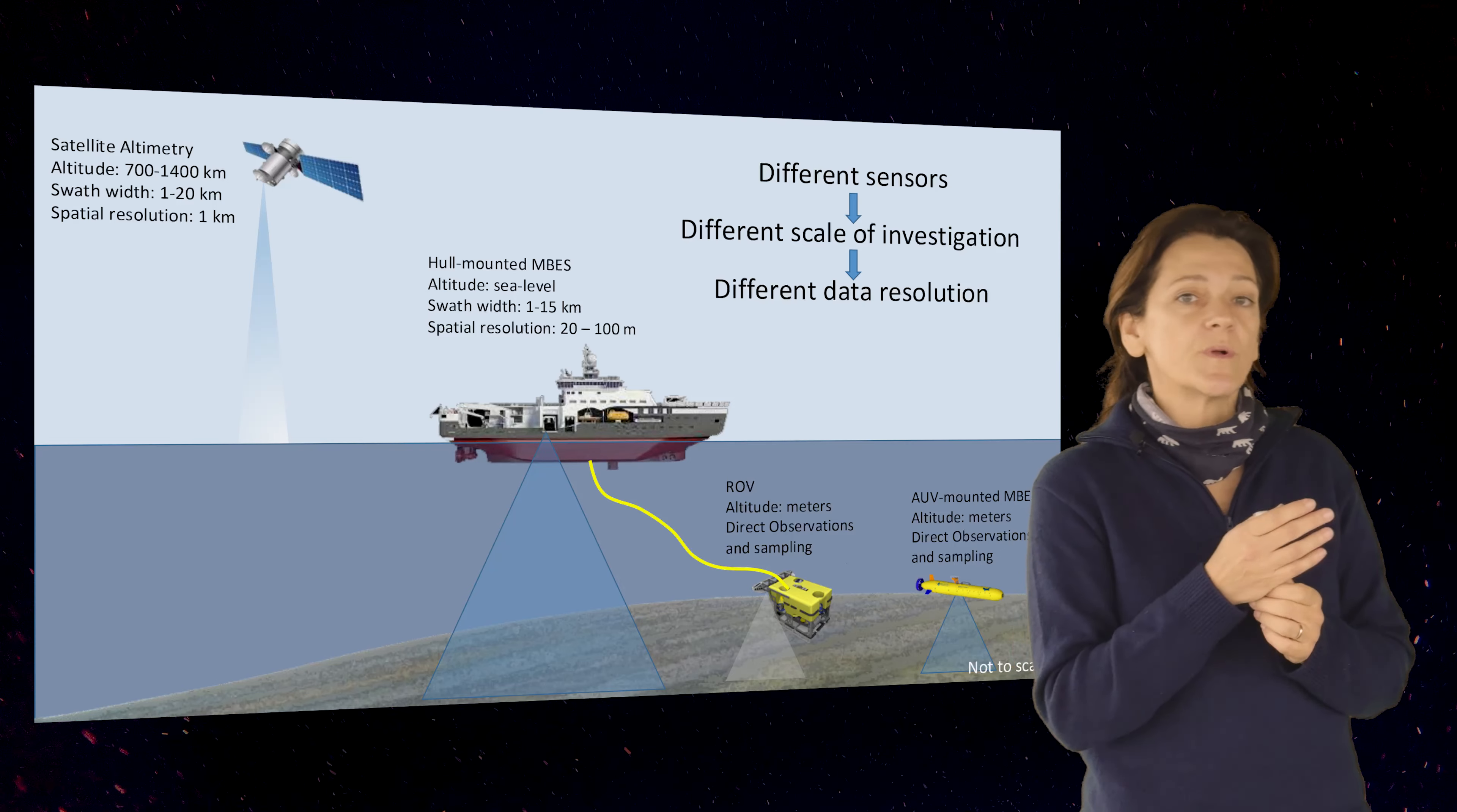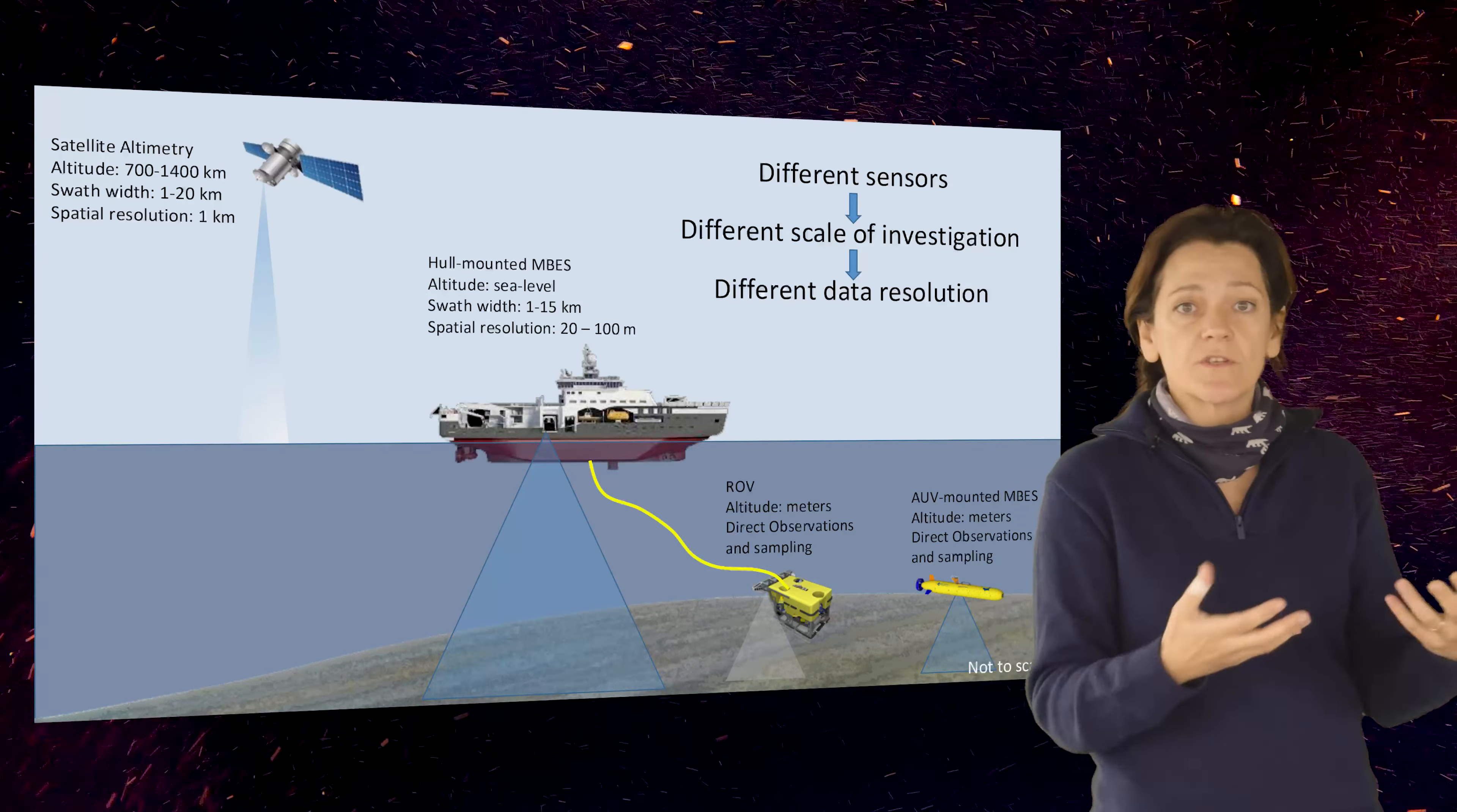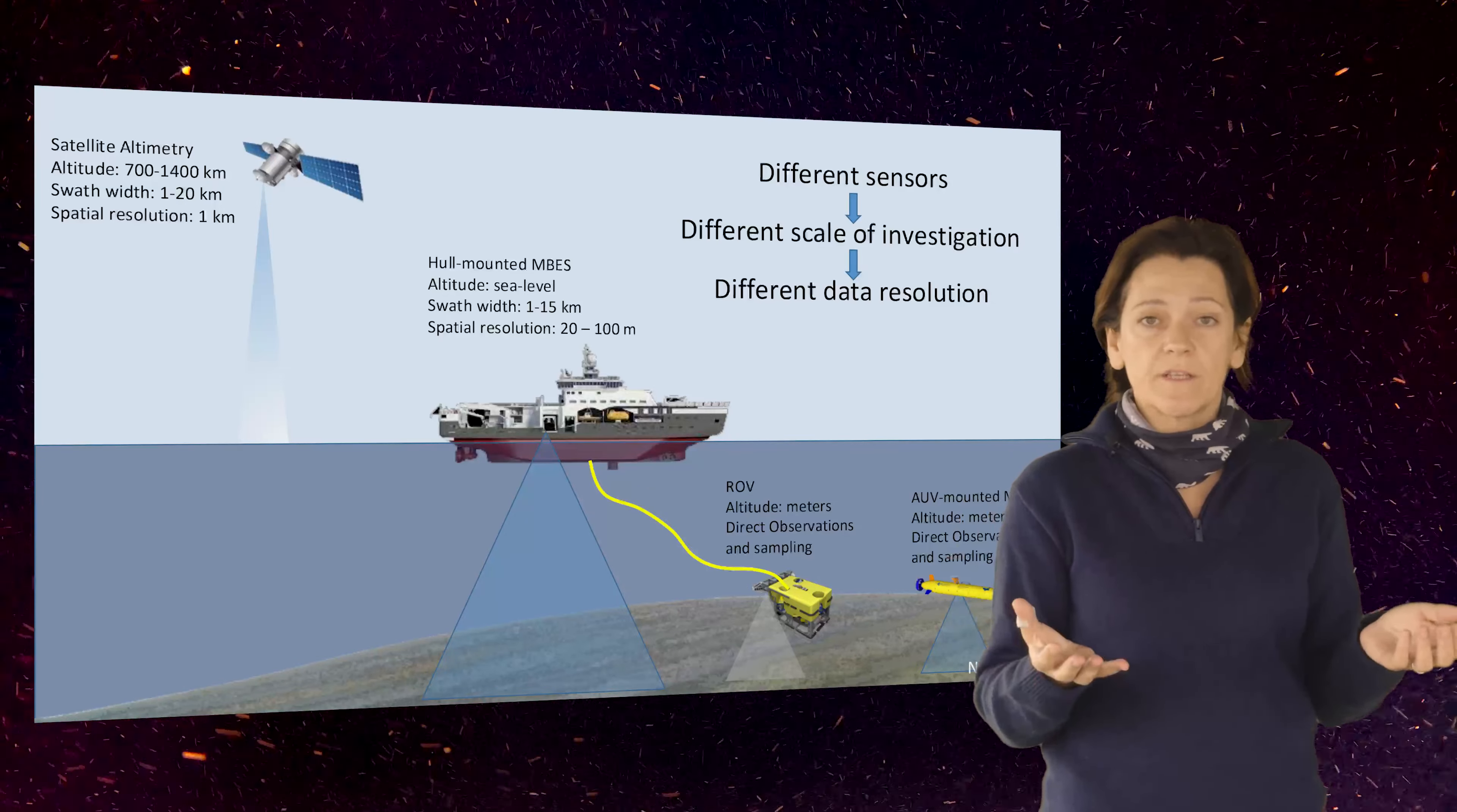And in this example, it's amazing how you can see the detailed map of this pockmark, in which we can see other additional depressions and a moundy topography. And if you consider that the ROV can also use videos and cameras, you can also obtain a direct observation of this variability you have.